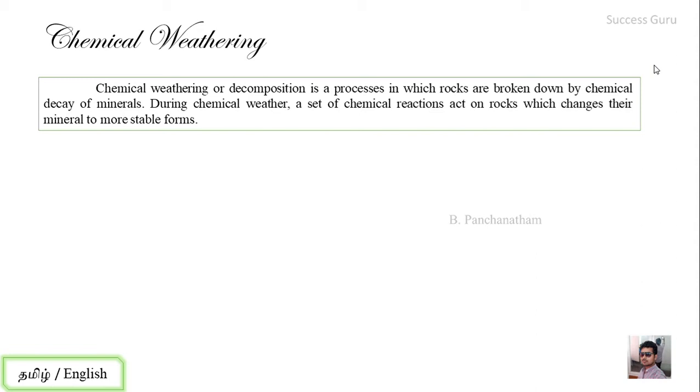During chemical weathering, a set of chemical reactions acts on a rock which changes their minerals to a more stable form. Unstable minerals are converted into stable minerals through these reactions.